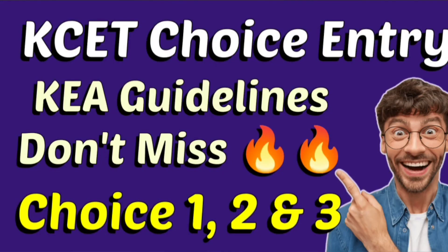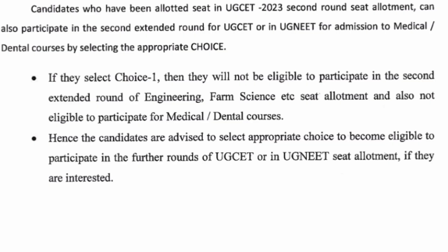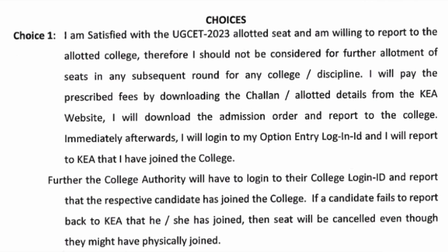This is about the KCET choice entry which is now open. There is a KEA guideline for different types of choices: Choice 1, Choice 2, and Choice 3. I am going to explain what these mean in this video. This is very important for any student who has got a seat allotted or not allotted and is willing to participate in the second extended round — they have to do the appropriate choice entry.